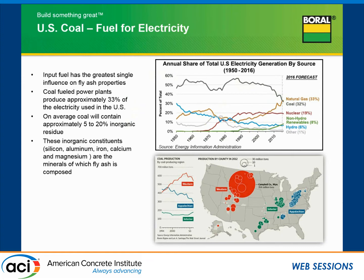I want to talk about coal variability. First, let me give you a snapshot of coal in the U.S., because this is the basis for why fuel variability in our stations is becoming an issue. The input fuel has the greatest single influence on fly ash quality we see in our stations. About 33% of the electricity generated in the U.S. is generated from coal. Back around 1990, it was over 50%, and now we're down into the 30s. A chief reason is the price of natural gas flowing below $3 per million cubic feet makes it more economical to generate electricity from gas. Coal use is declining, hydro is declining, nuclear has stayed the same, and natural gas has really gone up.